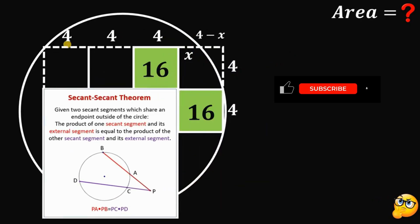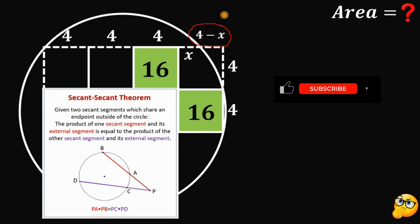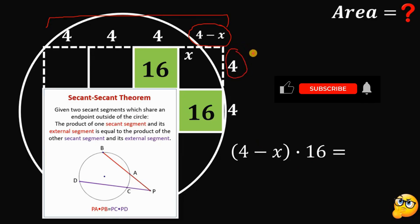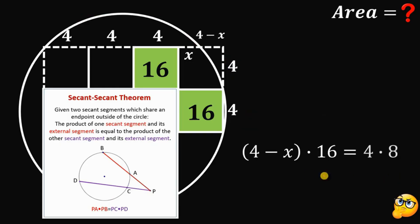Using this concept, we can now solve for the value of x. The external segment is (4 minus x), multiplied by the whole secant segment, which is 4 plus 4 plus 4 plus 4, equal to 16. So we have (4 minus x) multiplied by 16. And the other external segment is x, multiplied by the whole secant segment 4 plus 4, which equals 8. So we have x times 8.